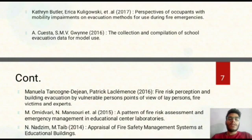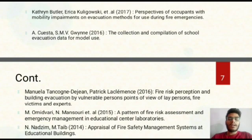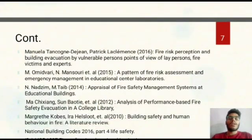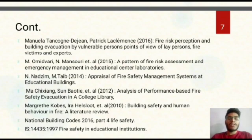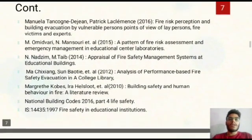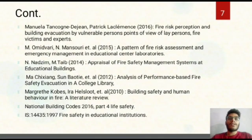In this fourth literature, data was collected from five evacuations, of which four were unannounced and one was semi-announced. The study aimed to determine pre-evacuation time, travel speed, route use, and evacuation arrival curves for the development of evacuation models. The fifth literature, published in 2016, is on fire risk perception by vulnerable persons, including lay persons, fire victims, and experts. It finds that risk perception is influenced by psychological, social, physical, political, and cultural factors.